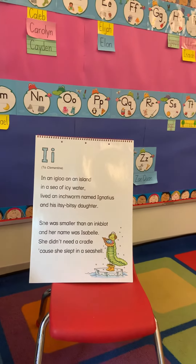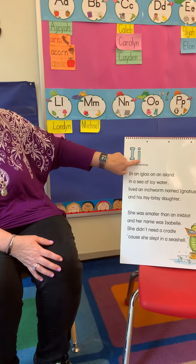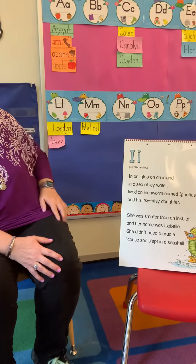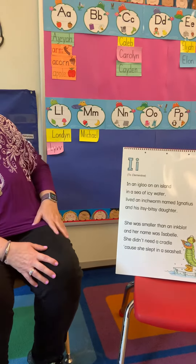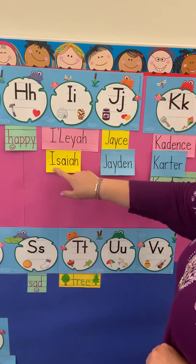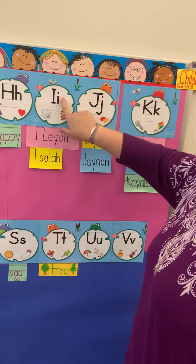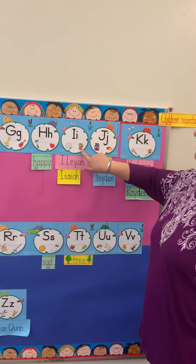And so we see the capital I here, lowercase i here. On our word wall, we see that we have two friends' names that start with I: Ileah and Isaiah. And the I makes two sounds — it makes a short sound like igloo and it makes a long I sound like ice cream.